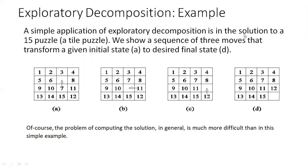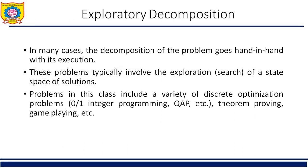In a solution to the 15-puzzle, we show the sequence of three moves that transform a given initial state A to desired final state B, as shown here. You can move the element into the blank space — up, left, or right — until we reach the desired level of granularity. This is exploratory decomposition, specifically used for discrete optimization problems, theorem proving, game playing, etc.